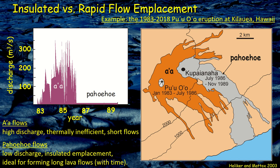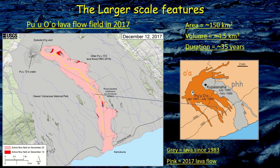Looking at a map of the Pu'u O'o lava flow field in 2017, all the gray area represents lavas formed from 1983 to 2017. The pink area is the lava active in November, and the yellow lines show the tube or internal pathways feeding lava to the active flow front — in this case, all the way to the ocean entry. The red areas are parts of the flow field active in December; even though they don't show a visible link to the transport system, they must be linked to it, with lava flowing through to feed these sporadic active flow fronts.